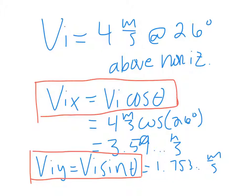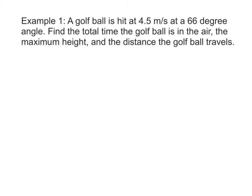I'll do two examples solving for projectiles fired at angles. First example: a golf ball is hit at 4.5 meters per second at a 66 degree angle. Find the total time the golf ball is in the air, the maximum height, and the distance the golf ball travels.